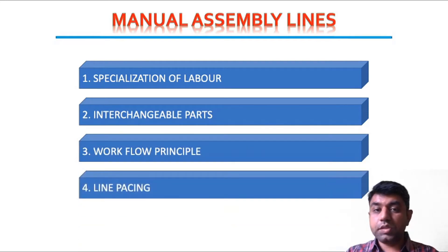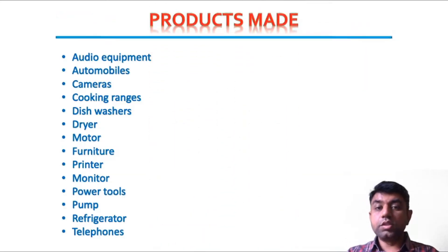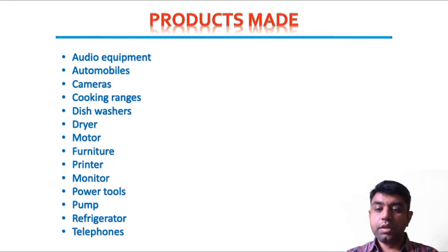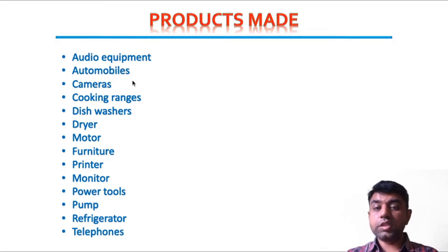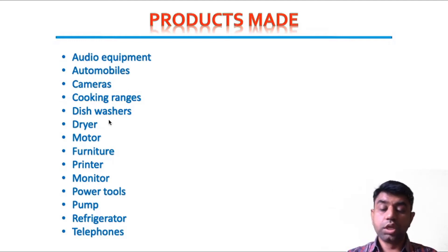The fourth principle is line pacing, which increases production flow. Almost all components we use daily — from the mobile phone to the end-product vehicle — are produced using the assembly line concept. Examples include audio equipment, automobiles, cameras, cooking ranges, dishwashers, motors, furniture, printers, monitors, pumps, refrigerators, and telephones.